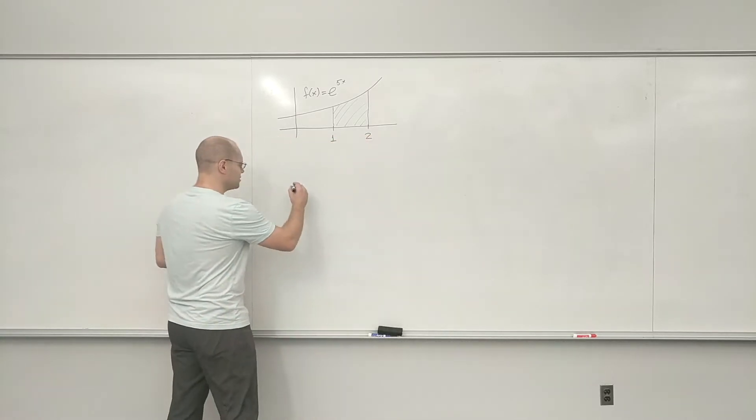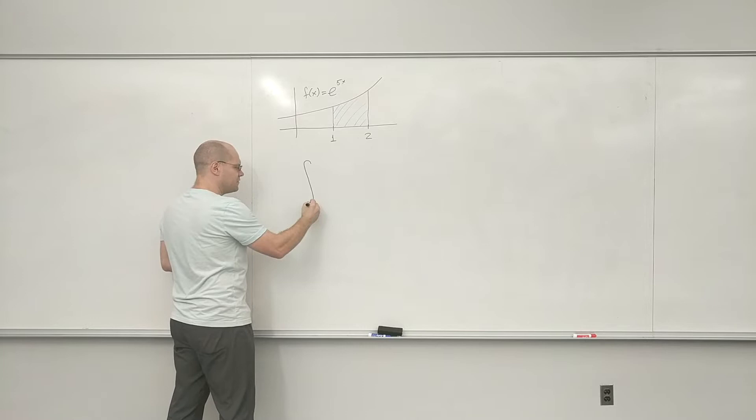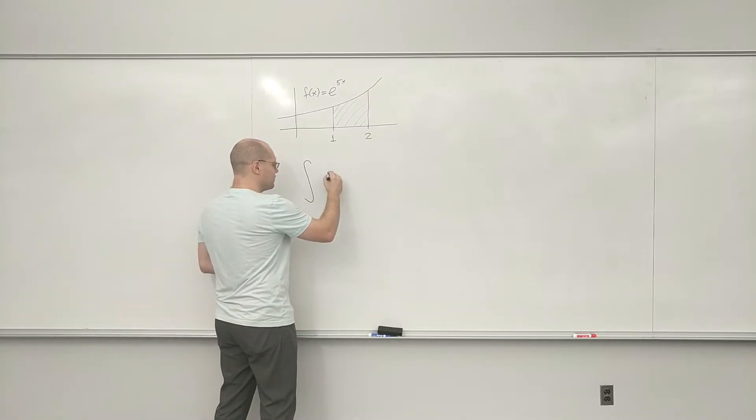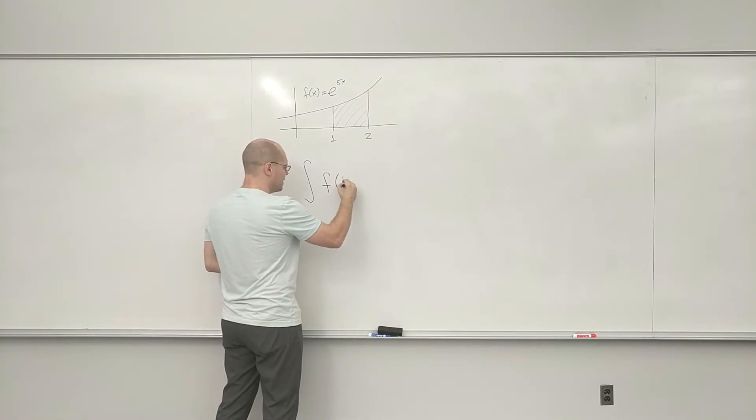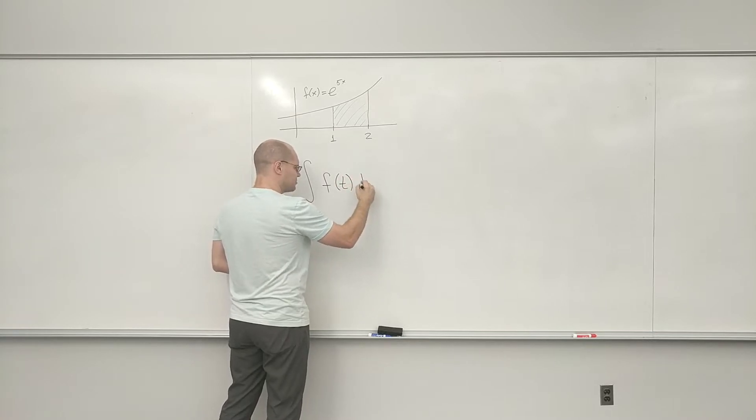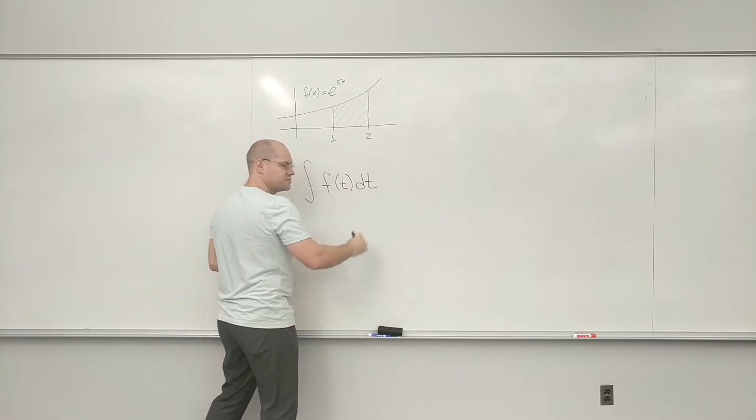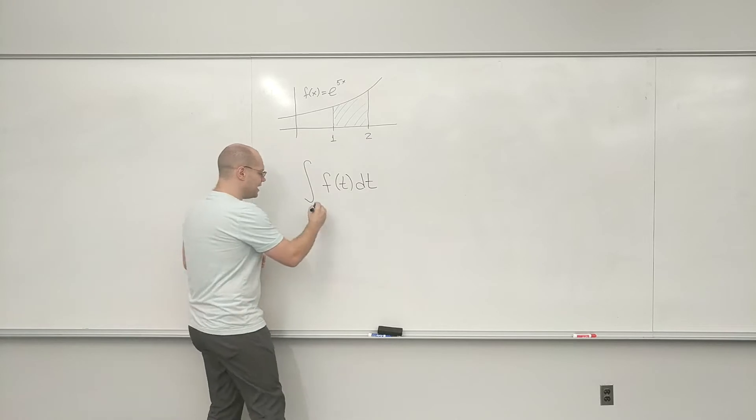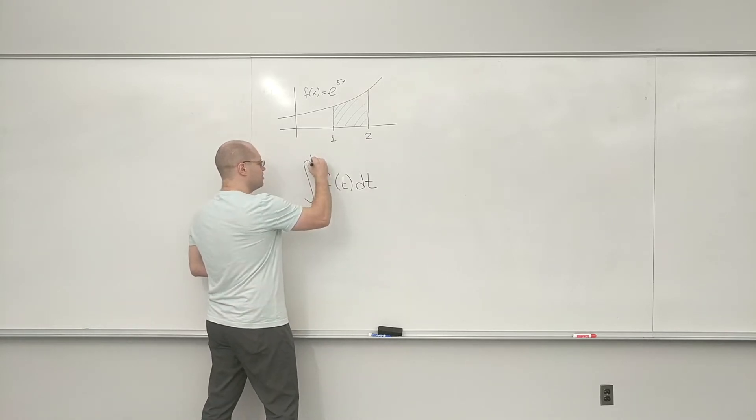So what we have learned is that when we're trying to find the area under the curve given by, let's say, f of t, f of x, but under the integral I will write f of t so my letters don't mix. From some point A to some point B,